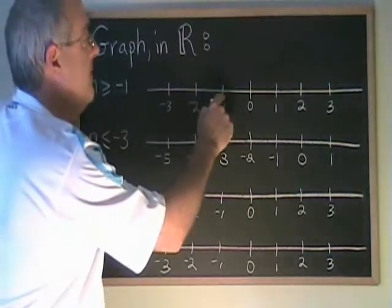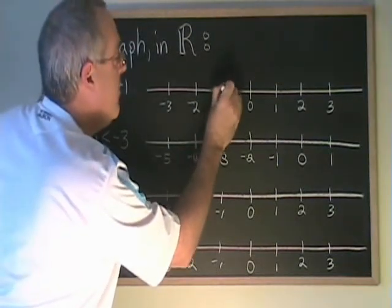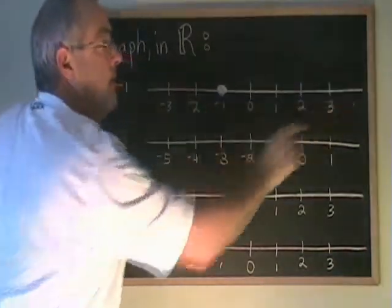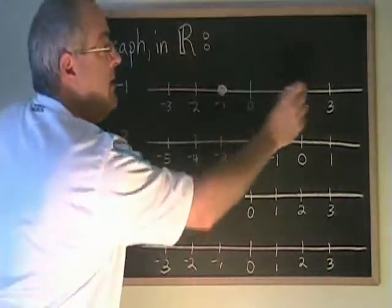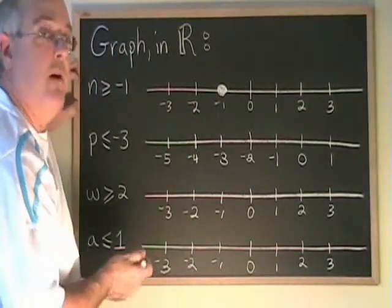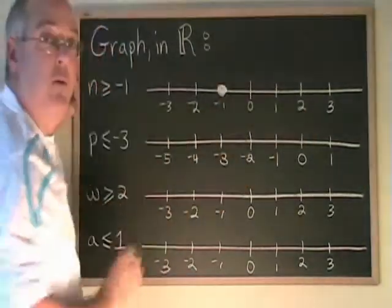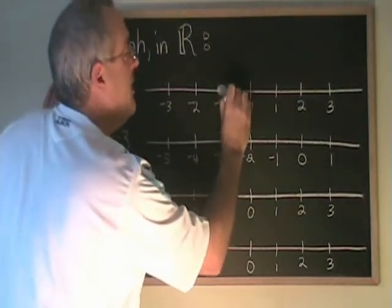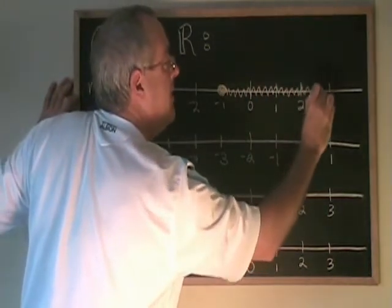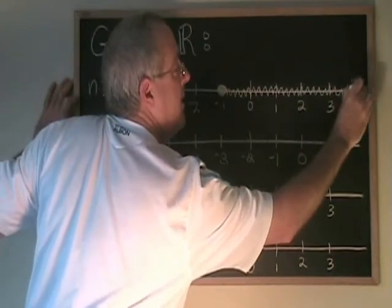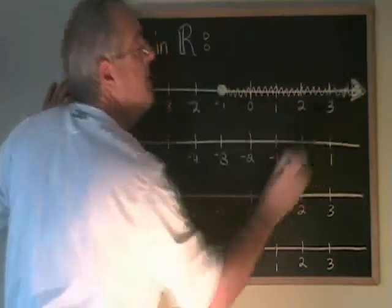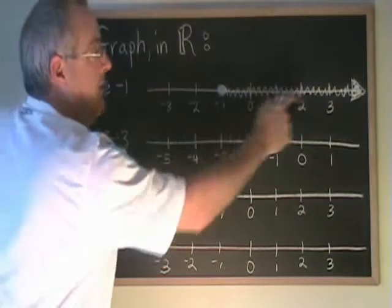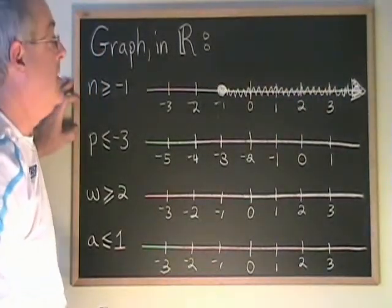N greater than or equal to negative 1. The number equal to negative 1 is negative 1, so we put a dot there — it's part of the answer. All of the numbers greater than negative 1 are over here to the right. But we can't just put dots anymore because working with real numbers, we have to include all of the fractions and decimals that exist in between those whole numbers. The way to do that is with shading. Starting at negative 1, we shade to the right, then put an arrow to indicate it goes on and on forever in the positive direction. This tells us negative 1 is part of the answer, and all numbers to the right of it, including all fractions and decimals, are also part of the answer.